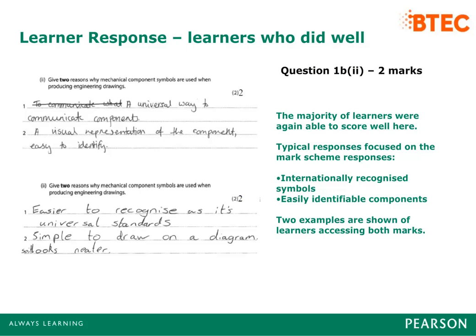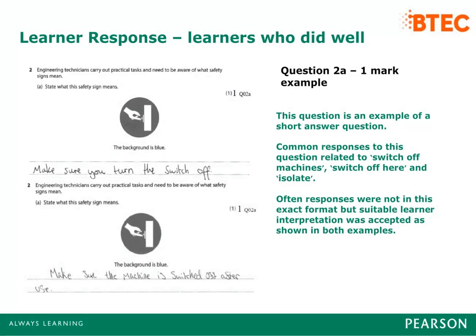Learners who did not score well here often gave repetitive answers centred around ease of identification and easy to understand. Many learners were able to correctly name the safety sign. The most common responses related to 'Switch off machines', 'Switch off here', and 'Isolate'. Responses were not always in this exact format but suitable learner interpretation was accepted. A typical incorrect response that was commonly seen was 'Emergency Stop', which is from the Safe Condition category.